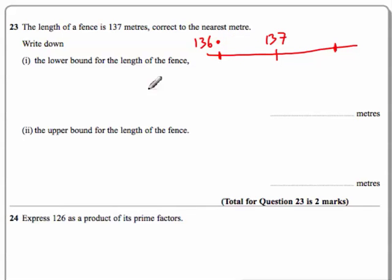So make it 5, and now this would round to 137 because this is 5 or more. If we rounded this to the nearest meter, then this would round to 137. So this is the lowest possible value that it could have been before it was rounded.